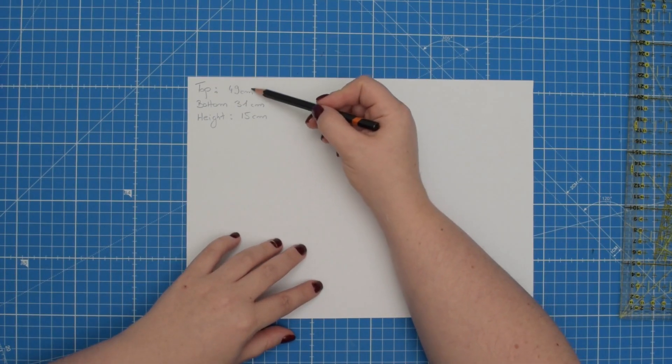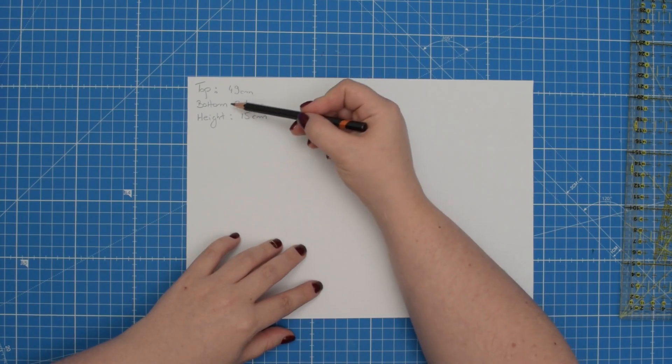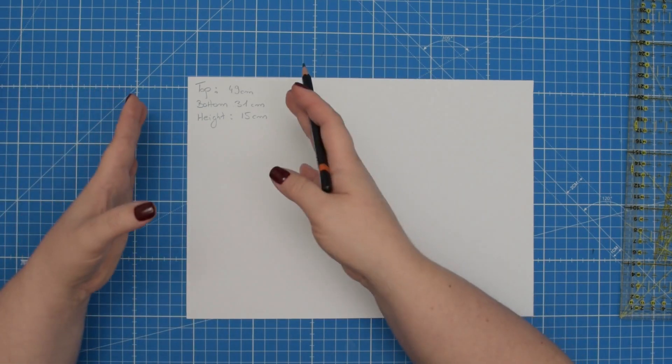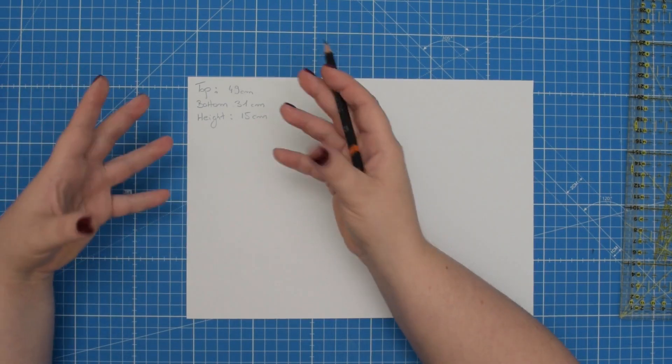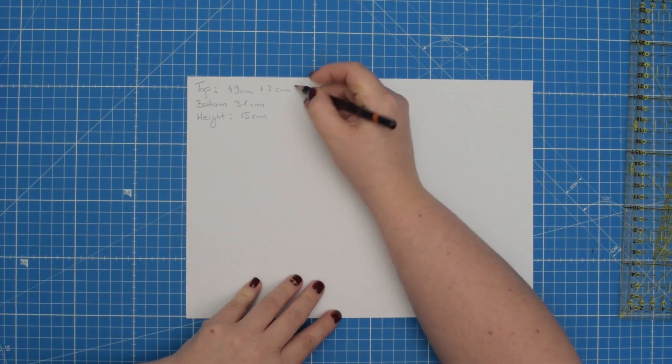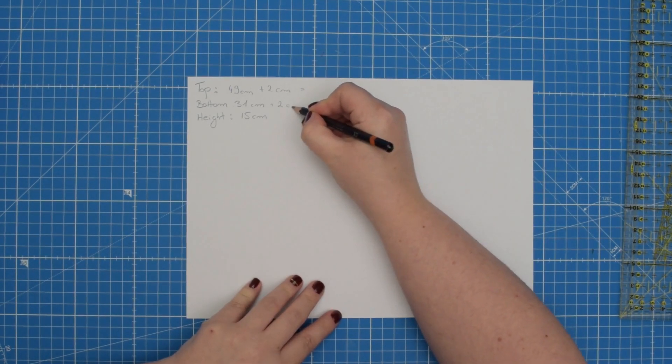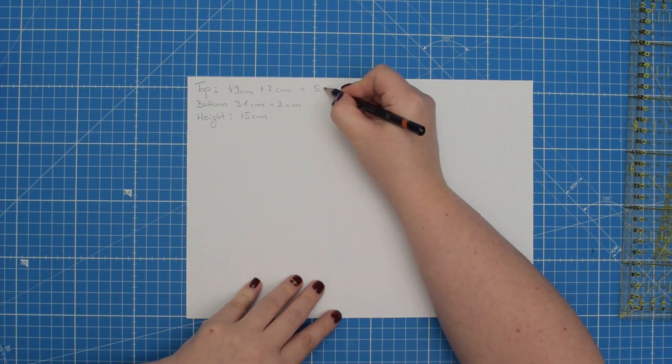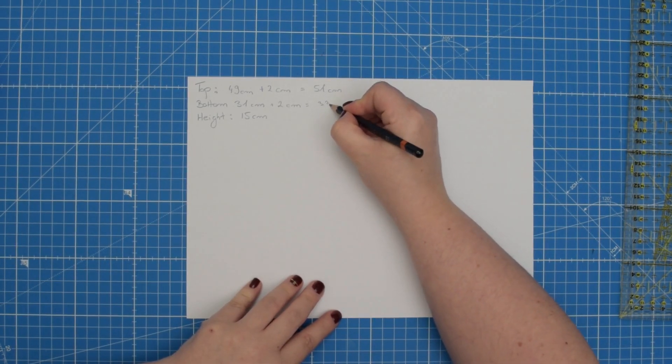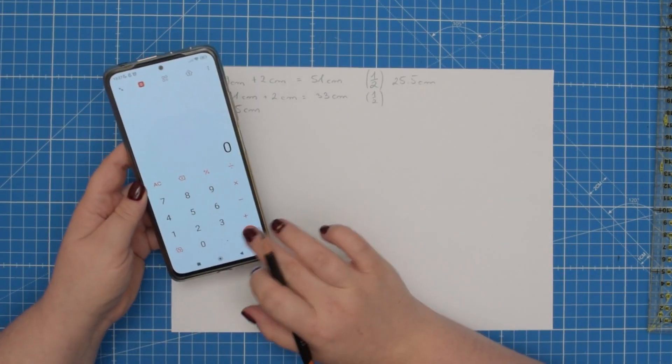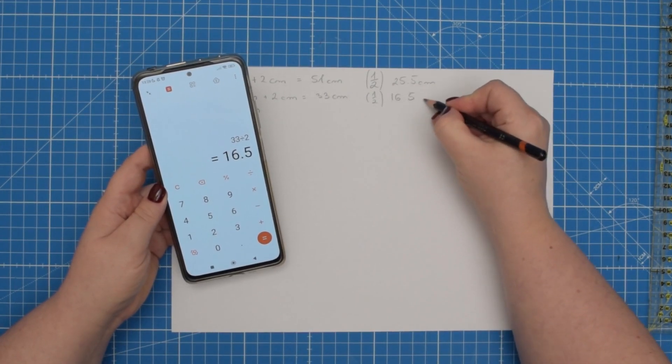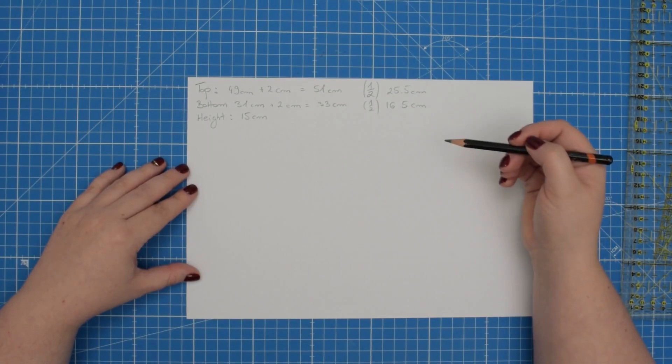I like to add an additional 2 cm of ease to the top and bottom circumference to ensure that I can place the flower pot inside the cover without any difficulty. So I'm going to write that down and calculate the total. So that gives me 51 cm and this gives me 33 cm. Once you have those numbers divide them by 2 because we are only going to draft half of the pattern. Now we can start drafting our pattern.